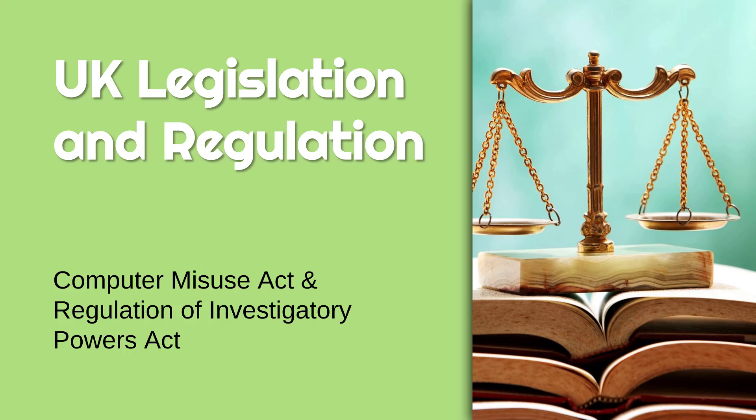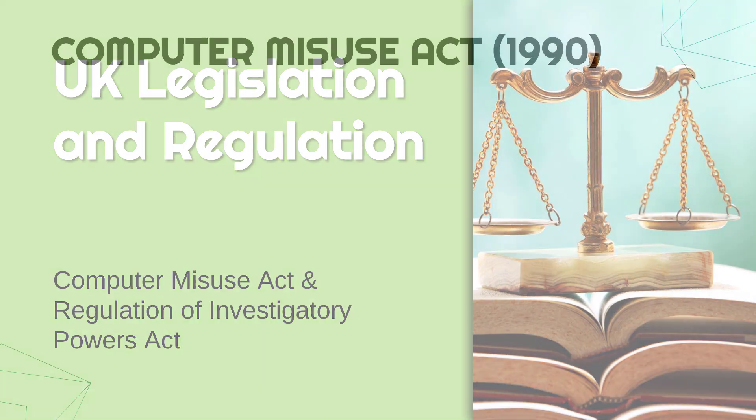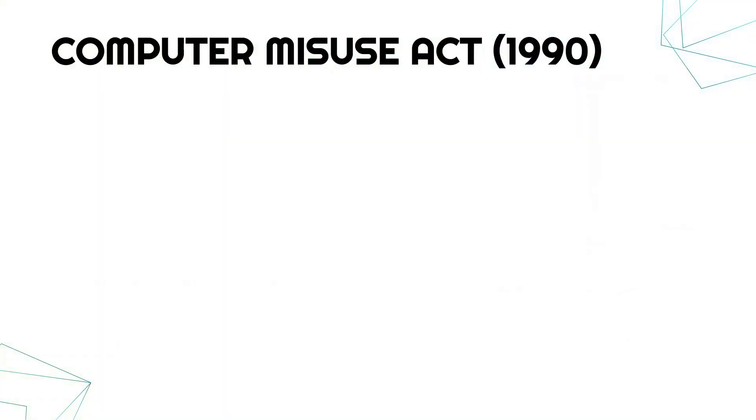We're going to talk about two relatively different laws, but I've grouped them together because they're both about using computers in a way you shouldn't. The first law is about individual people and the second law is about governments, but both are about not doing what you should be doing.